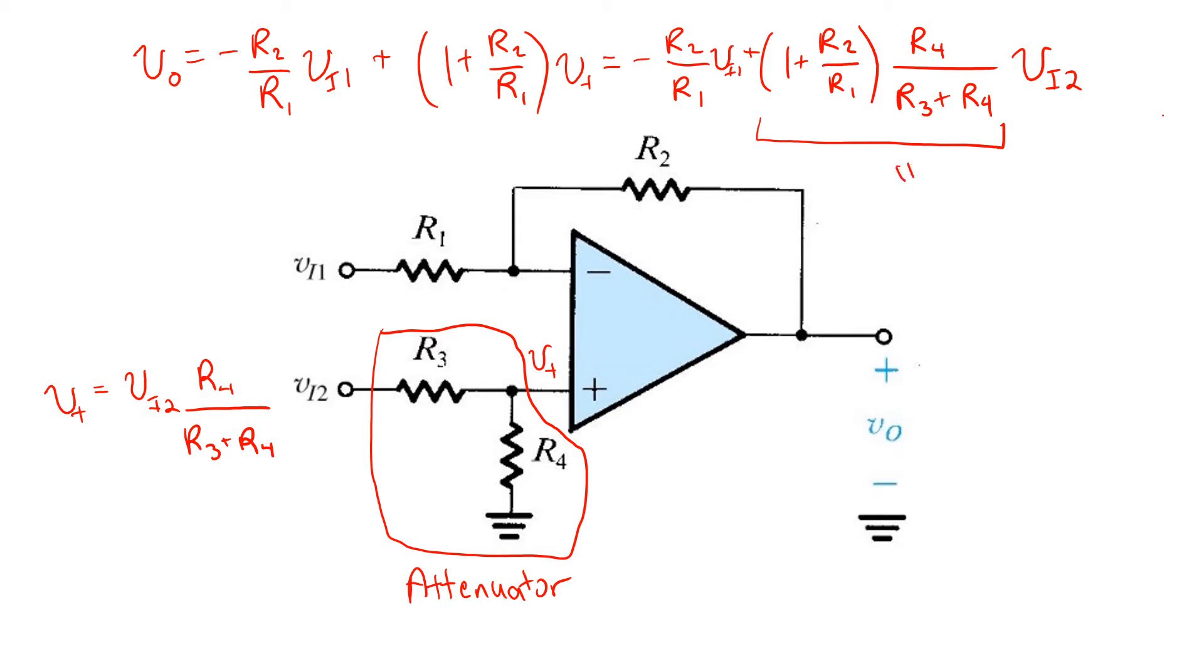So, how can we make this term equal to R2 over R1? Well, we can do so simply by taking R4 over R3 equal to R2 over R1. You can substitute that back into the expression up above and confirm that the result will be VO equals negative R2 over R1 times VI1 plus R2 over R1 VI2.